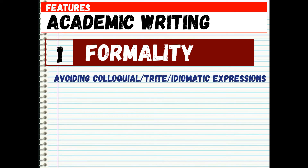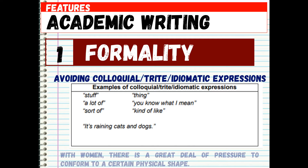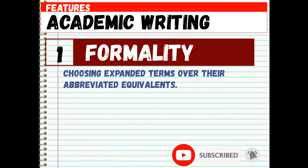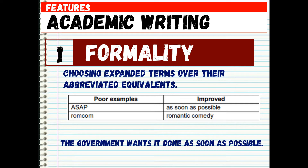Formality also involves avoiding colloquial, trite, or idiomatic expressions such as 'stuff,' 'thing,' 'a lot of,' 'you know what I mean,' 'sort of,' 'kind of,' and 'like.' The sample sentence is: 'With women, there is a great deal of pressure to conform to a certain physical shape.' Additionally, choose expanded terms over abbreviated equivalents — for example, 'ASAP' becomes 'as soon as possible,' and 'rom-com' becomes 'romantic comedy.' The sentence is: 'The government wants it done as soon as possible.'